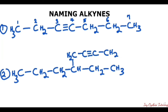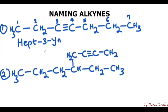So from this side we have seven carbons, meaning 'hept' is our root — hept represents seven. The triple bond started from three, so we'll have hept-3-yne. 'Yne' represents the suffix for all alkynes. This is how you name this compound.